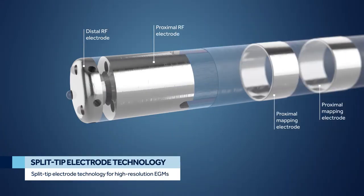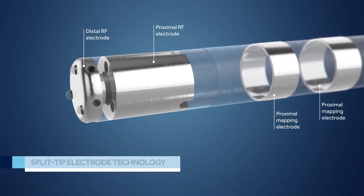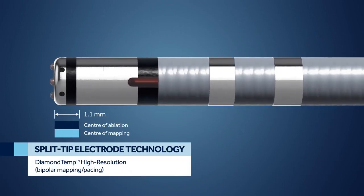The 4.1 millimeter catheter tip segment consists of a split-tip electrode, which is electrically isolated, allowing for clear, high-resolution EGMs at the ablation location.